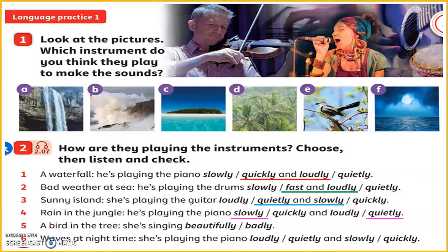Number five — 'A bird in the tree.' Is she singing beautifully or better? Yes, beautifully. Number six — 'Waves at night time.' Is she playing the piano loudly, quietly and slowly, or quickly? That's right: quietly and slowly. Very good answer.